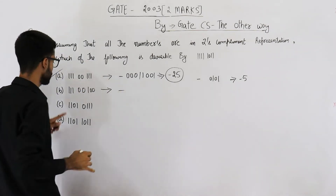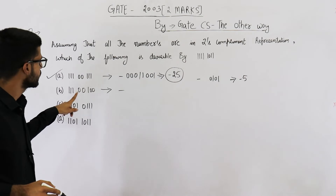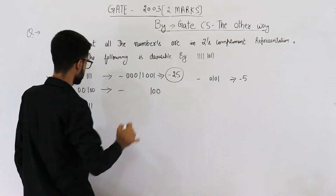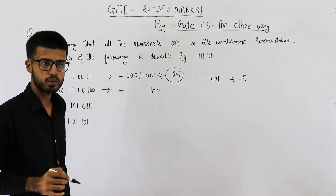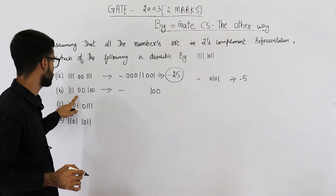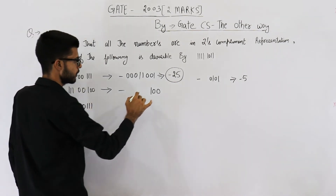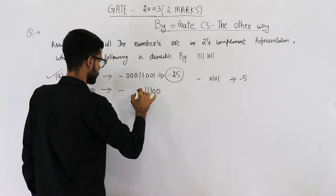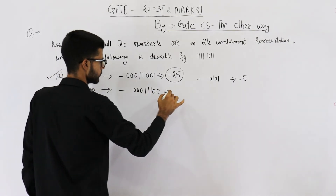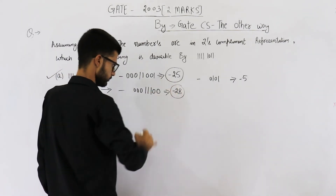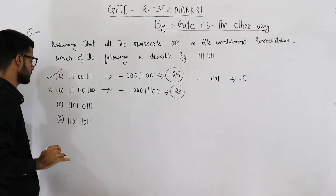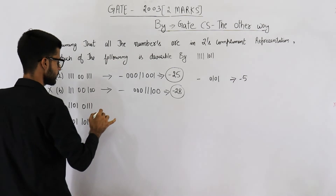Still, let's analyze option B. Put a minus sign because the MSB is one, then take the two's complement. Copy the number as-is until the first one, then take the one's complement of the remaining pattern — that gives zero zero one one zero zero zero zero, which equals 14 times two, so option B is minus 28. Minus 28 is not divisible by minus five, so option B is rejected.